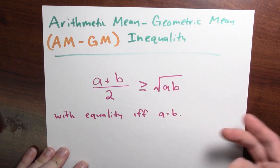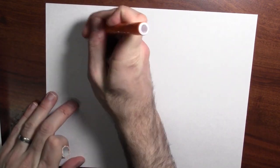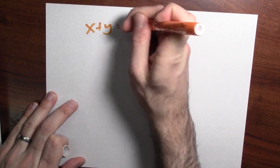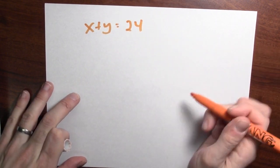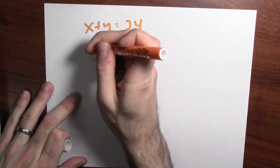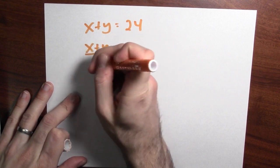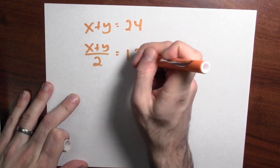Now, how can you use something like this? Well, in our specific case, what do we know? I know that x plus y is equal to 24. And if these two numbers add to 24, then their average, x plus y over 2, must be equal to 12.